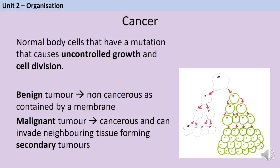Cancer is another non-communicable disease. It occurs when normal body cells undergo a series of mutations leading to uncontrolled growth and cell division. Unlike normal cells, which divide a set number of times before dying, cancer cells continue to divide, grow their own blood vessels and take over. A tumour can be benign — cells contained by membrane and staying in one place — or malignant, meaning the tumour is cancerous and may invade neighbouring tissues, forming secondary tumours in other organs.